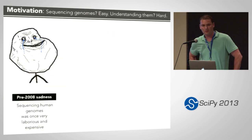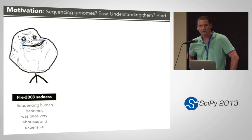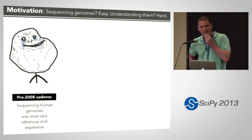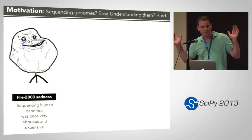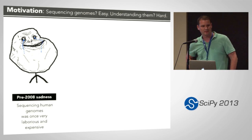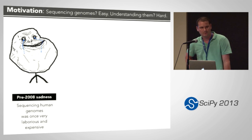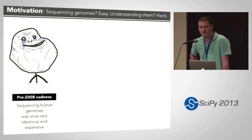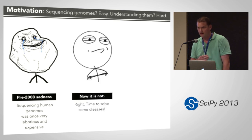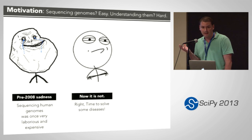In genomics, we're at a really great point in time. Prior to 2008, it cost like a bajillion dollars and a thousand people to sequence one genome. Roughly around 2008, a little before, there was an explosion of new, really high throughput DNA sequencing technologies that make it a whole lot cheaper. We're now on the order of $4,000 per genome.